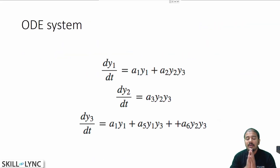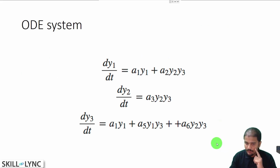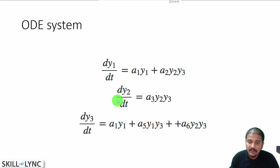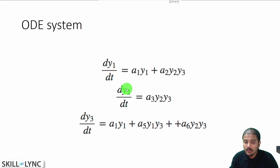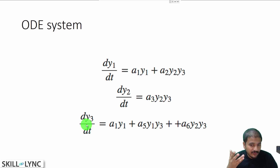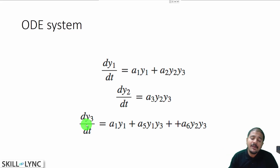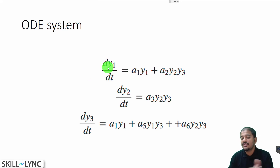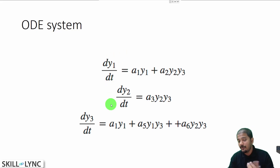Now we are going to put all these pieces together. We have an ordinary differential equation system and for simplicity I have assumed three ODEs: dy1/dt, dy2/dt, and dy3/dt. You are solving for y1, y2, and y3 — you can think of these as species, for example y1 can be carbon dioxide, y2 can be carbon monoxide, and y3 can be your fuel species. Essentially, we are tracking how the concentration of y1, y2, and y3 change with respect to time. This is what you call a coupled ODE system.